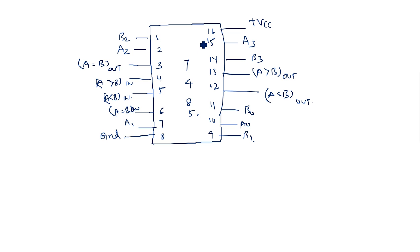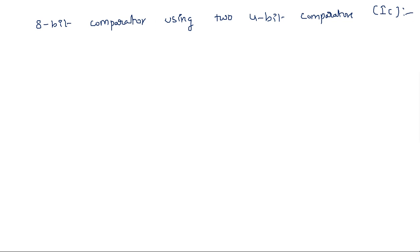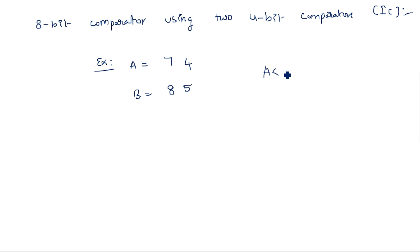IC 7485 is a 4-bit comparator. If we want to compare 8 bits, we need to use two 4-bit IC 7485s. Let us see an 8-bit comparator using two 4-bit comparators. For example, taking the first number as 74 and the second number as 85 — we consider this as number A and this as number B. By looking at these, we can say it is A less than B.